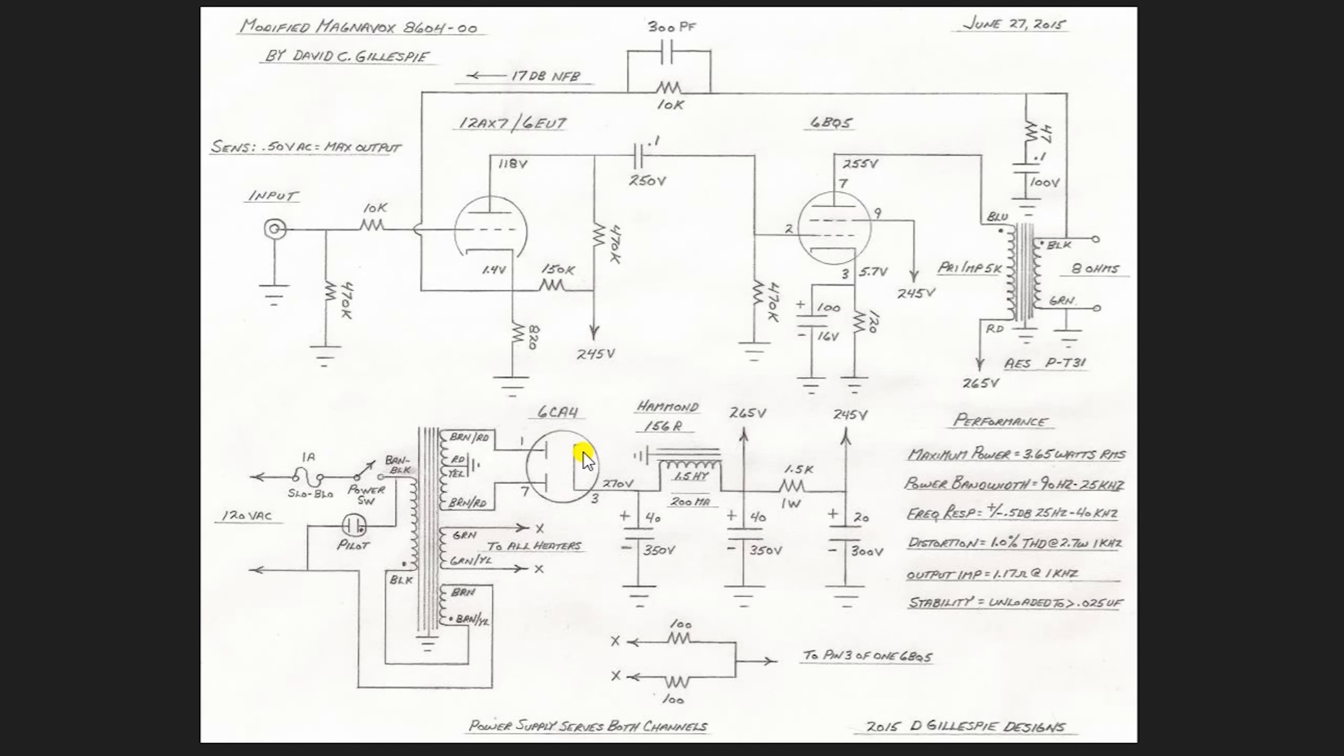Okay, so we see we've got a tube rectifier. He's using a 60A4 because he didn't have a 5 volt winding, which we do. As you see, got a choke here. He used a 40 UF and a 40 UF, where we're using a 22 and a 150. And I'll show you on the PSUD2 software, how all that figures into the ripple that we're going to see in this 265 volt. So he's wanting 265 volts going into the output transformer, which we have.